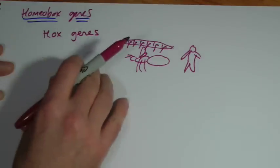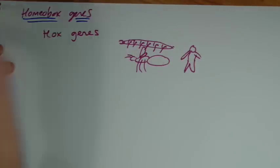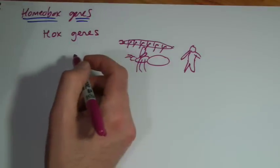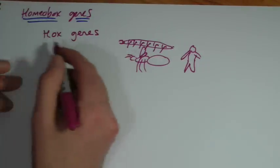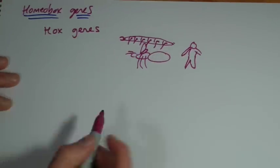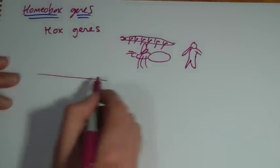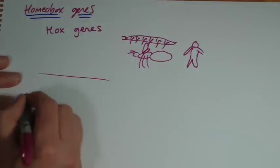So it's an example of things that are conserved between organisms, and it's a great example of the evolutionary history, the commonality of DNA. So these genes themselves tend to come in clusters called hox clusters.